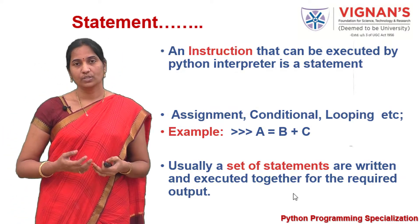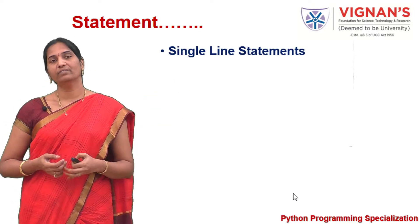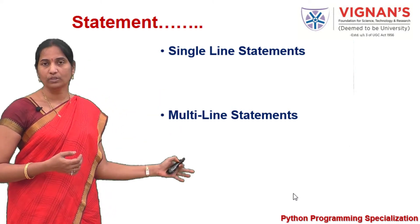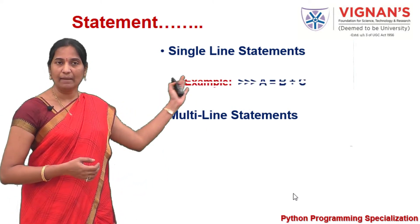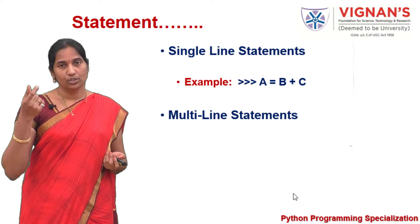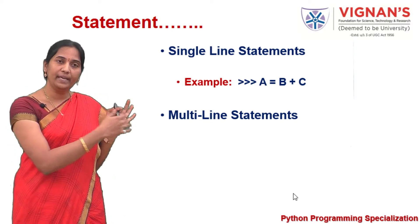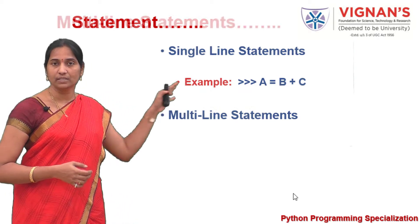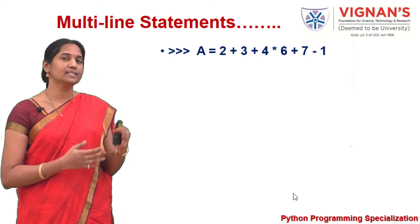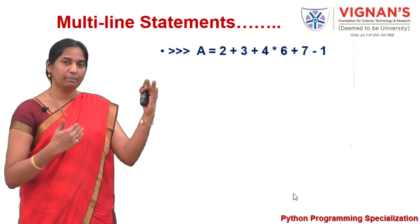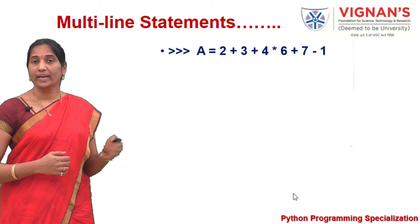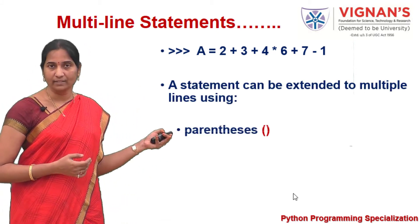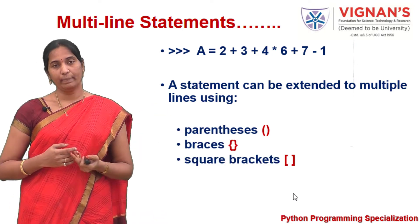In Python, a statement can be written either in a single line, or we can extend a single statement to multiple lines. Python supports both of these. If you consider a short statement, it can be finished in a single line. For a lengthy statement, or for your convenience, you may need to extend it to multiple lines. You can do this either implicitly by using parentheses, curly braces, or square brackets, or explicitly using the backslash character as a continuation character.